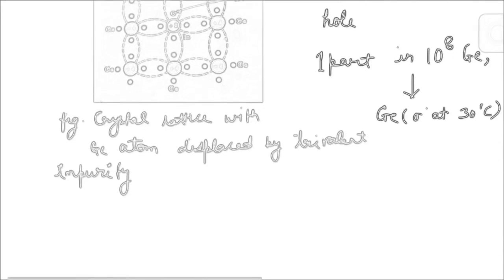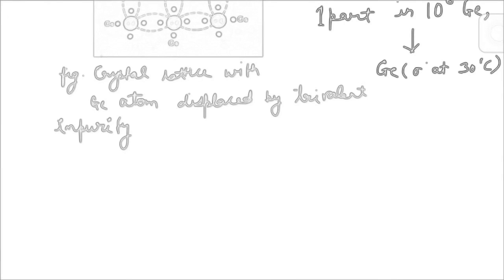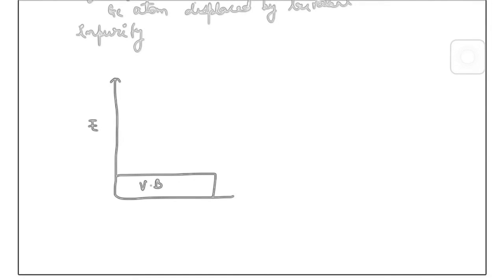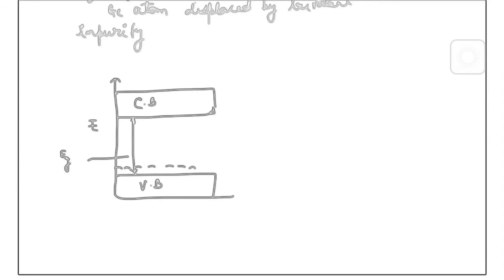For the effect of p-type or acceptor-type impurity in the energy band diagram: adding acceptor impurity in a semiconductor creates an additional allowable energy level just above the valence band. In the energy band diagram of a p-type semiconductor, the valence band and conduction band are separated by the energy gap Eg. This additional level is represented by Ea, the acceptor energy level, and is located just above Ev, the valence band edge.